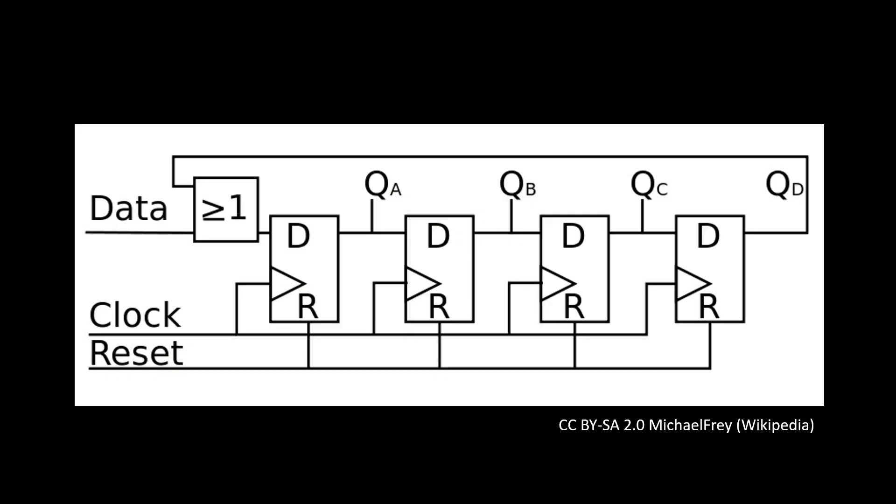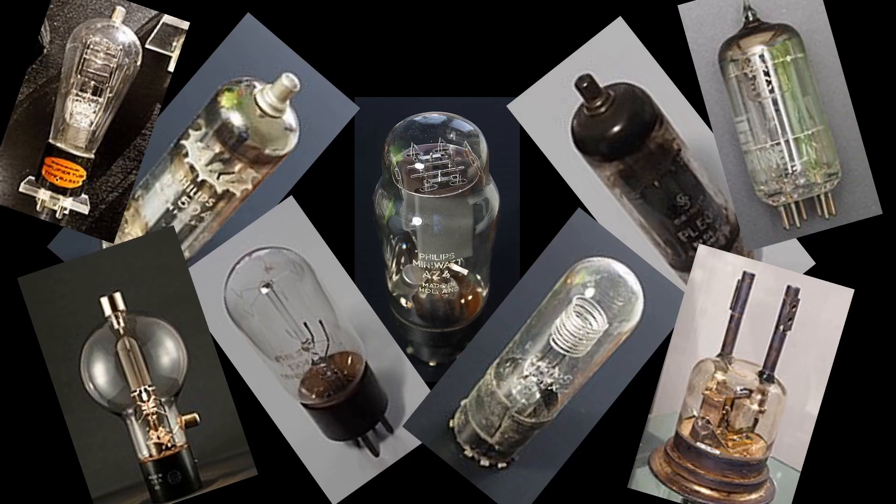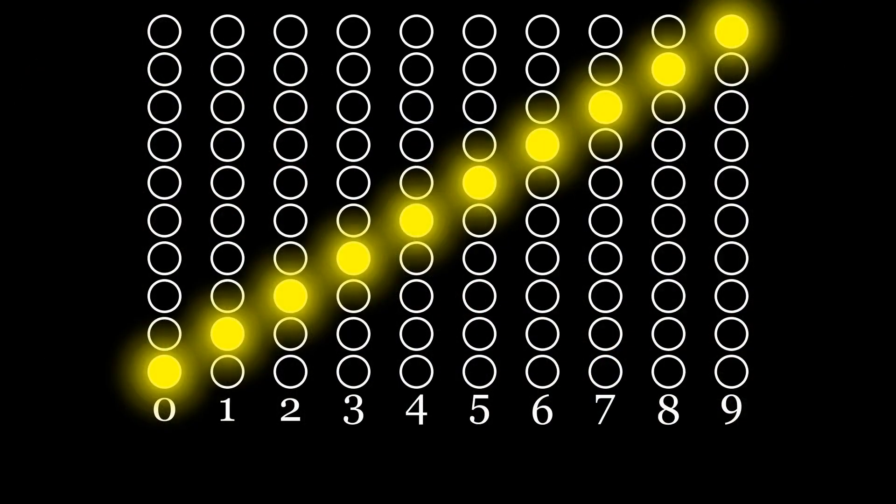ENIAC recorded 10 digit decimal numbers with devices called ring counters, which stored each digit on a bank of 10 vacuum tubes. But that takes a lot of vacuum tubes, because base 10 numbers require rather large ring counters. In fact, the number of vacuum tubes we need is the number of digits multiplied by the base, which is exactly the radix economy.